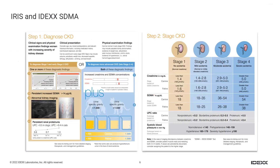With the advent of SDMA, it allows us to more easily pick up those patients with IRIS Stage 1 or early IRIS Stage 2 kidney disease. One thing to really emphasize is we're not going to make that diagnosis based on a single SDMA value. Just like a patient with a mildly increased creatinine, you want to demonstrate that it's persistent. So if we get that mild increase in SDMA and everything else is okay, we're going to want to repeat that measurement.